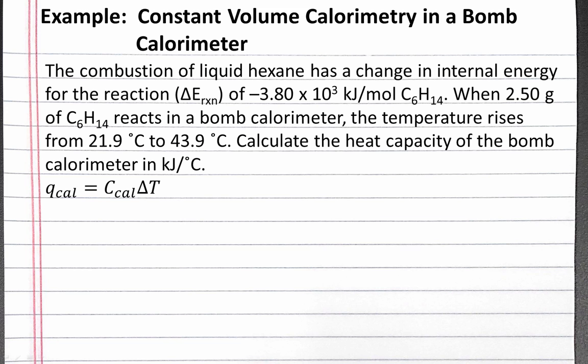For this problem, we can use the equation: heat for the calorimeter equals the heat capacity of the calorimeter times the change in temperature. We also make the assumption that the heat absorbed by the calorimeter was released by the reaction, so Q_cal equals negative Q_reaction. And finally, because this is a bomb calorimeter at constant volume, our change in internal energy for the reaction is equal to our heat released by the reaction, because no pressure-volume work is done. We can combine these equations and rearrange for the heat capacity of the bomb calorimeter, and we'll get C_cal equals negative change in internal energy for the reaction divided by the change in temperature.